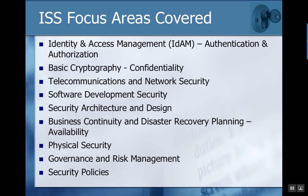Software development security and security architecture and design relate to developing and structuring how you do security — making sure software is developed securely without vulnerabilities. Security architecture is from the broader perspective of what is in place and how things run. Continuity and disaster recovery planning is tied to availability, making sure that if you lose data or access to a data center — for example like Puerto Rico — you have the ability to resume operations. Some of this is technical, some is process, and some is business.